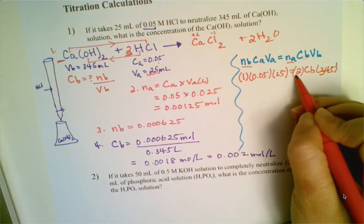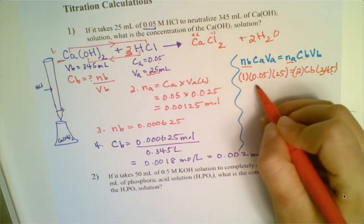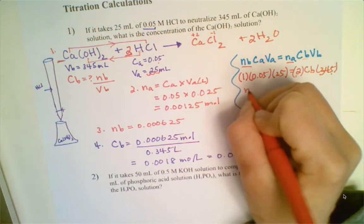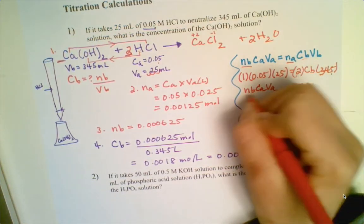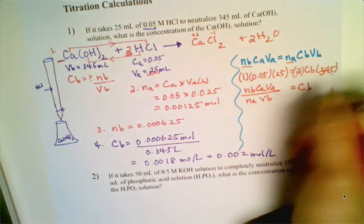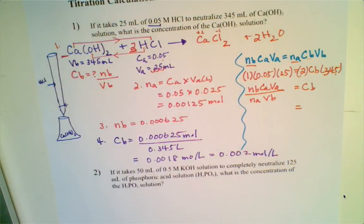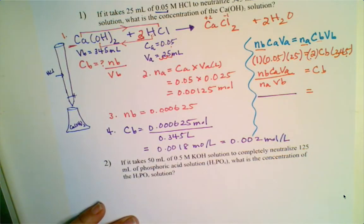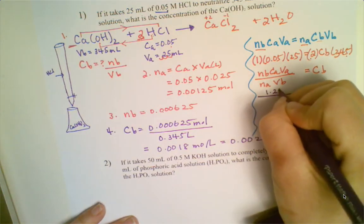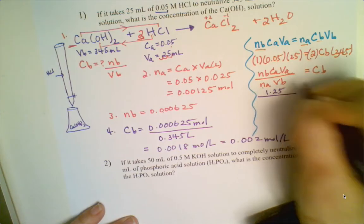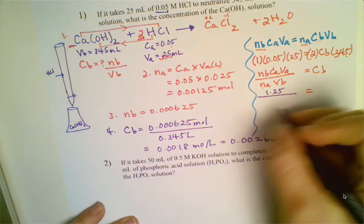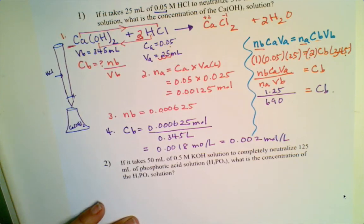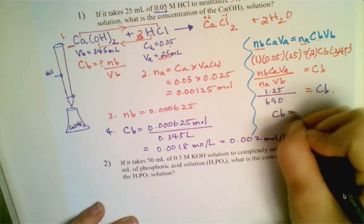Rearranging to solve for concentration of base: CB = (N_base × C_acid × V_acid) / (N_acid × V_base). Substituting: numerator is 1 × 0.05 × 25 = 1.25; denominator is 2 × 345 = 690. Dividing gives the exact same value as the four-step method.